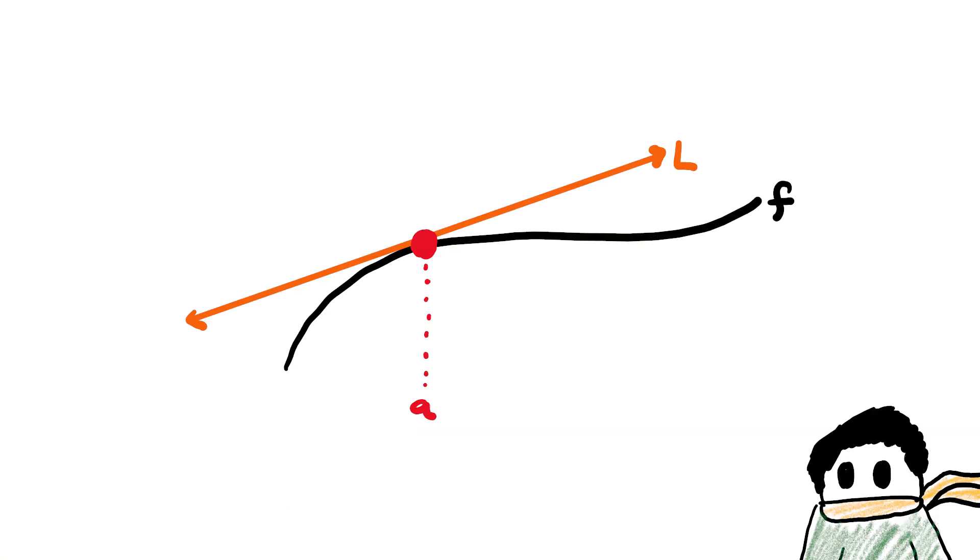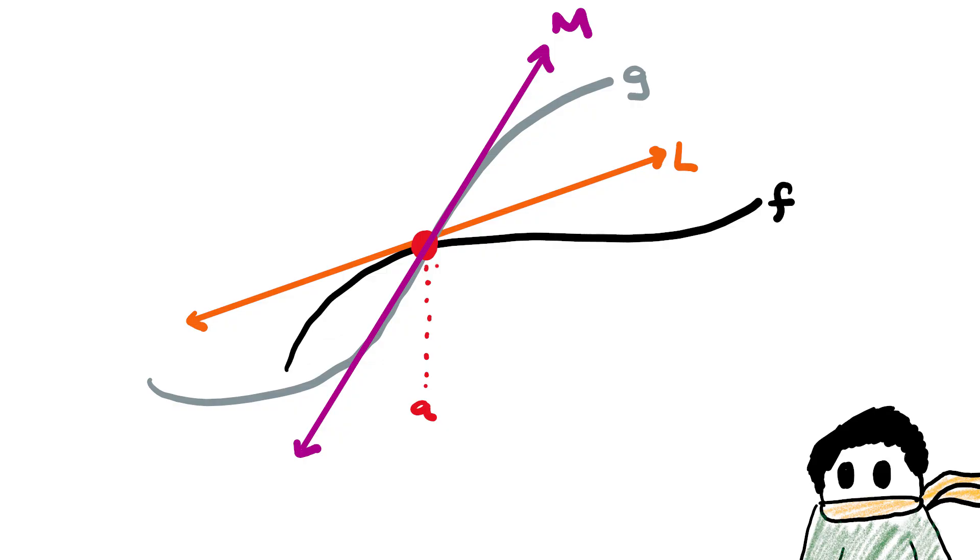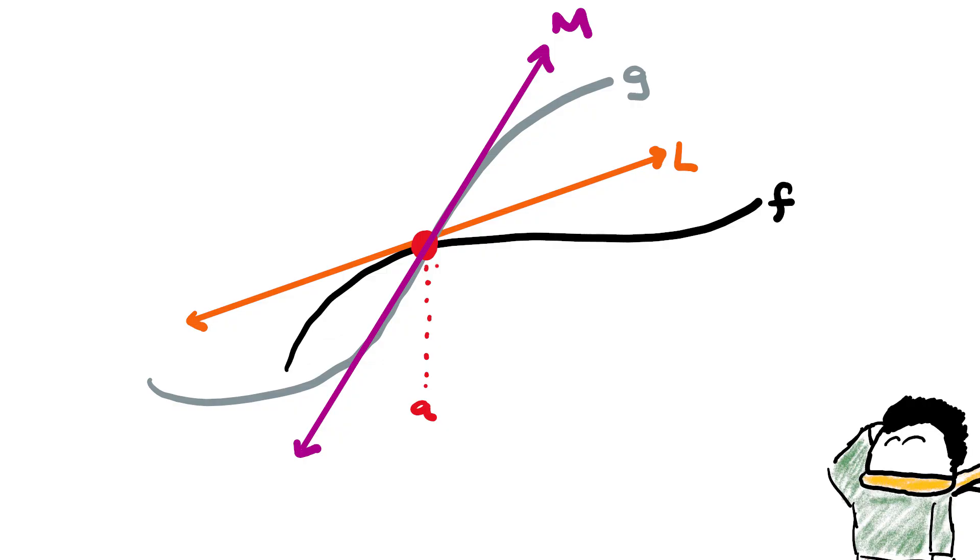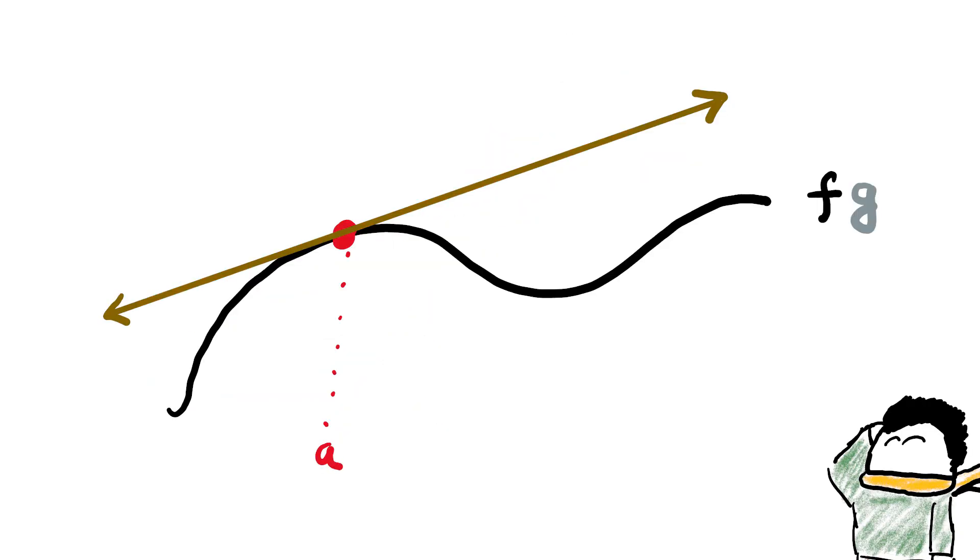But this resolution is dissatisfying to me. Let me tell you why I started thinking about this stuff in the first place. If you have a tangent line l to f and m to g at x equal to a, then how can you combine these two lines to produce a tangent line to the function f times g at x equal to a?